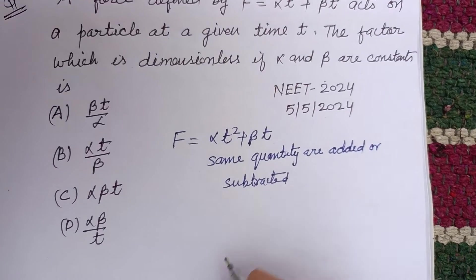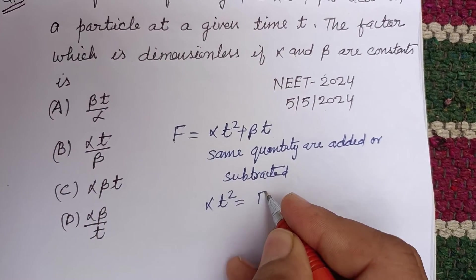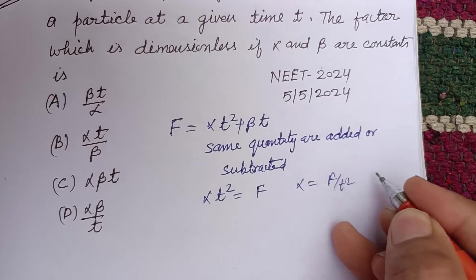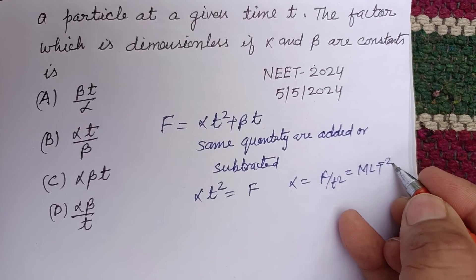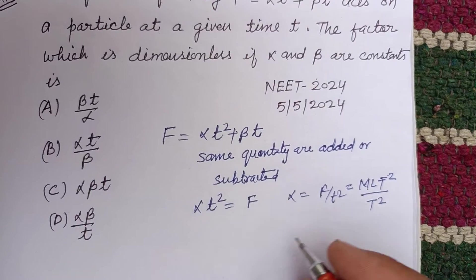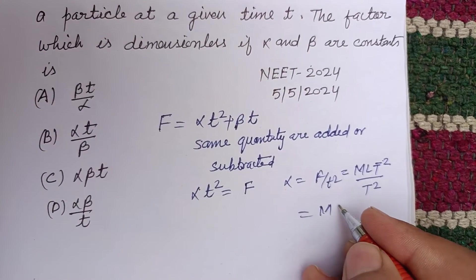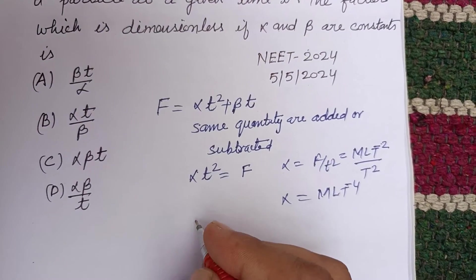This is the principle of dimension. Therefore, alpha t squared is equal to F, so alpha equals F over t squared. F dimension is MLT to the minus 2, and this is t squared. So the dimension of alpha is MLT to the power minus 4.